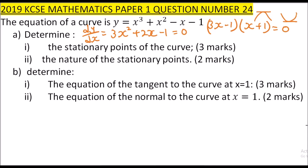I hope you know how to factorize — you have already covered that in quadratics. So this means x equals one-third or x equals minus 1. These are the turning points of the curve y equals x cubed plus x squared minus x minus 1.